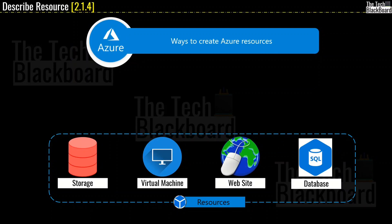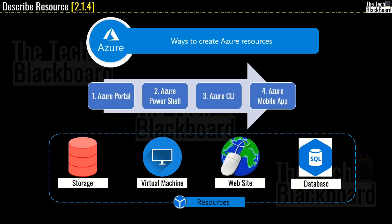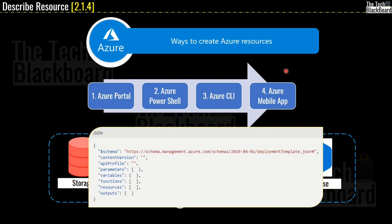Now you know how to create resources on the Azure portal. But is the Azure portal the only way? Of course not — besides the Azure portal, we also have Azure PowerShell, Azure CLI, and the Azure mobile app. One more quick piece of information: all resources in Azure can be created or represented as JSON files — JavaScript Object Notation. For the fundamentals course you don't need to deep dive into JSON formats, but it's good to know.